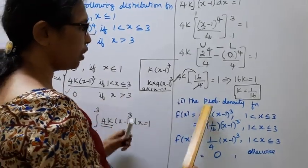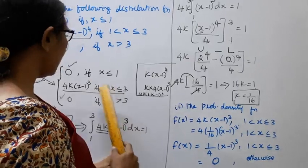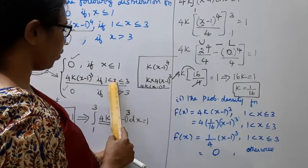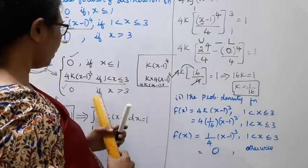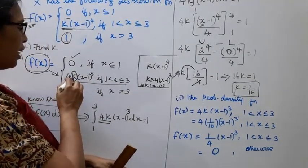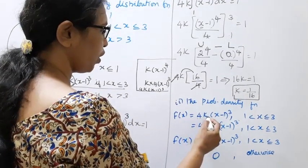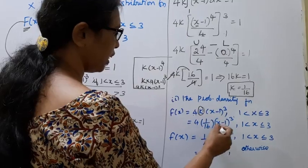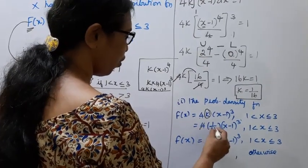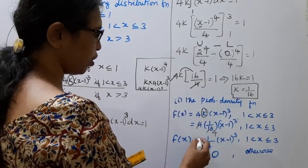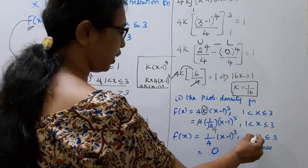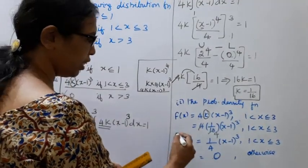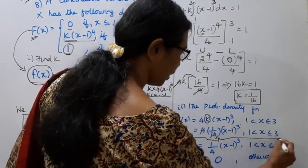Second submission, the probability density function. Probability density function, f(x), 4k into x minus 1 cube, 1 the whole cube. If 1 is less than x, less than or equal to 3. 1 by 4, 1 less than x less than or equal to 3. 1 minus 1 is 0, 0 otherwise. This is the answer.